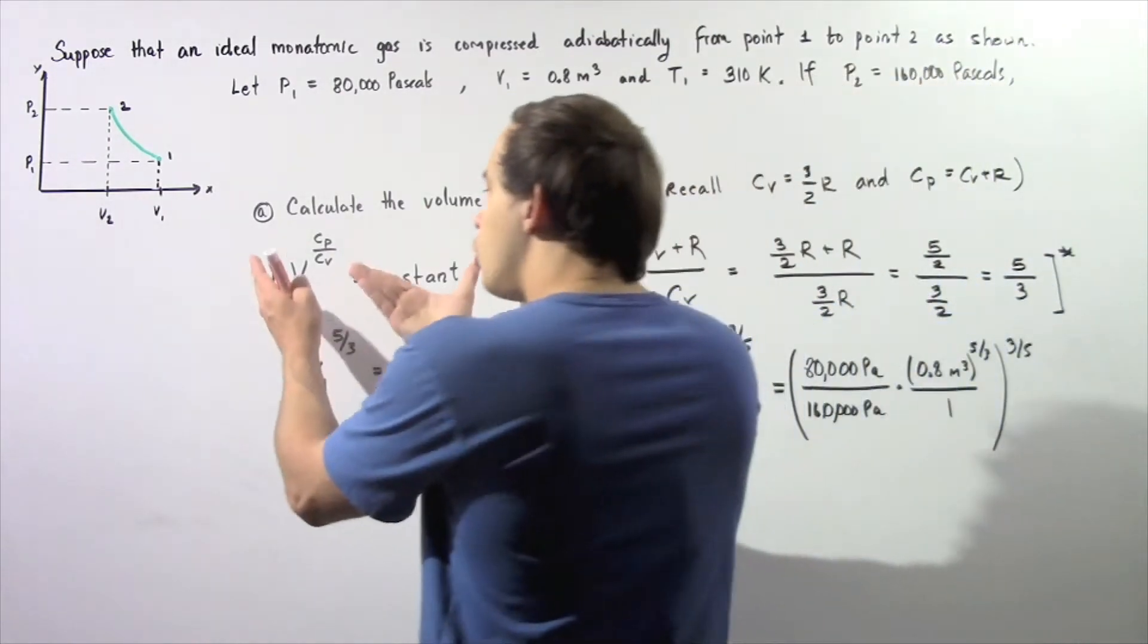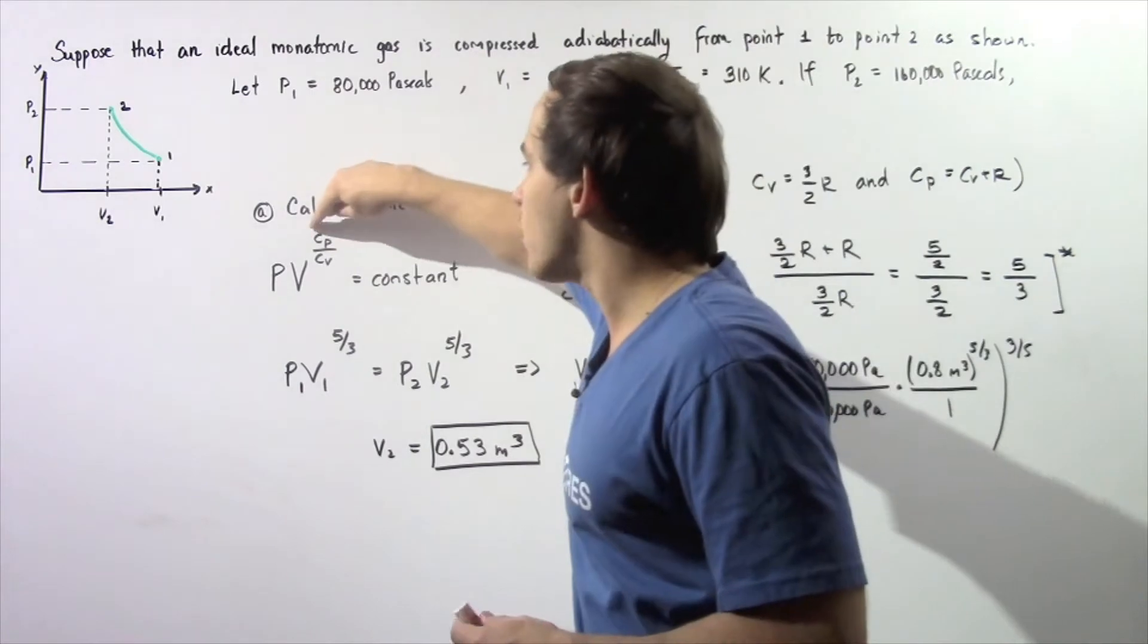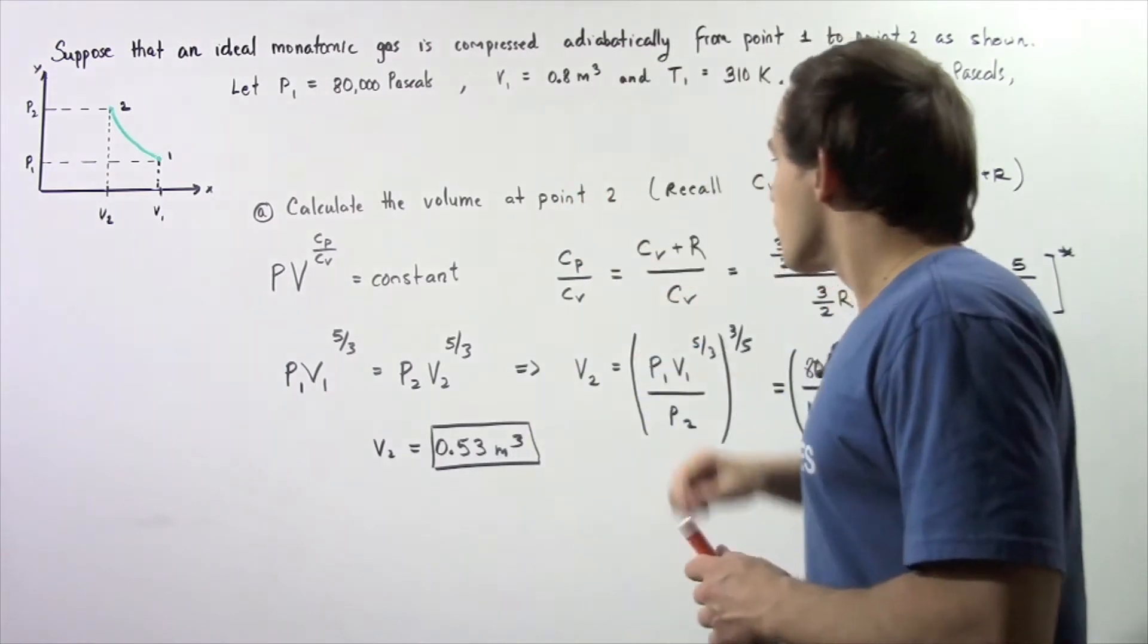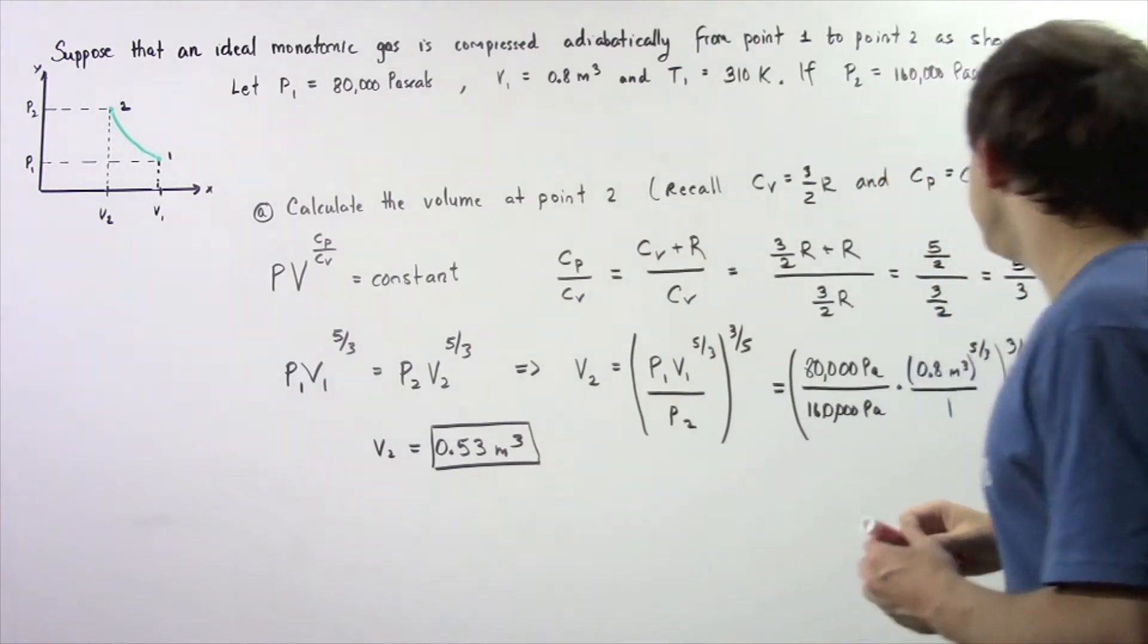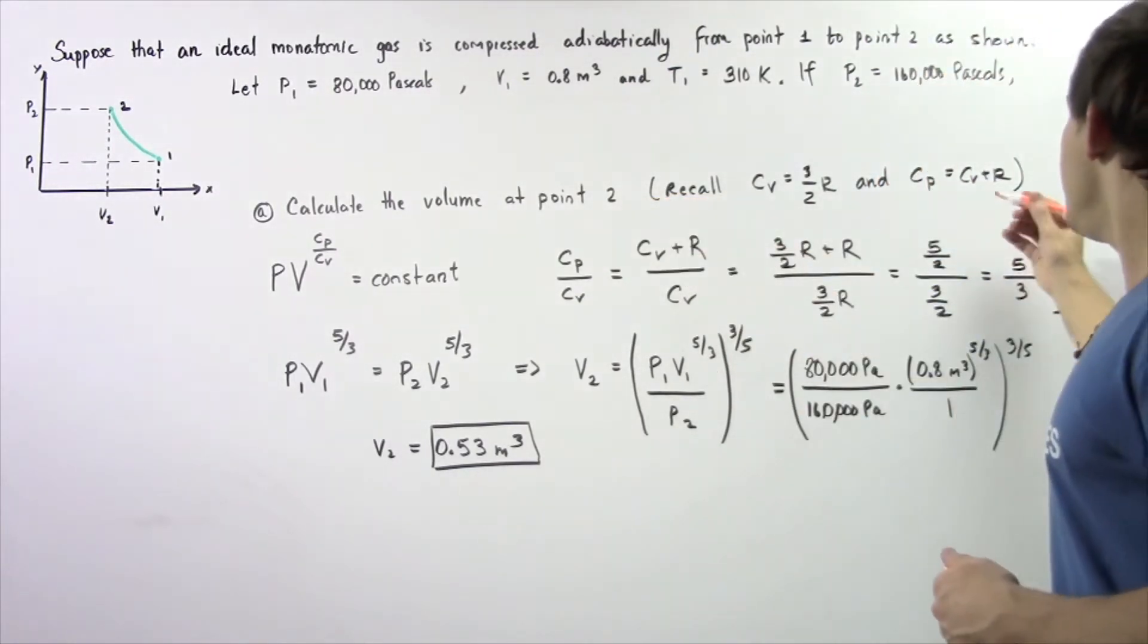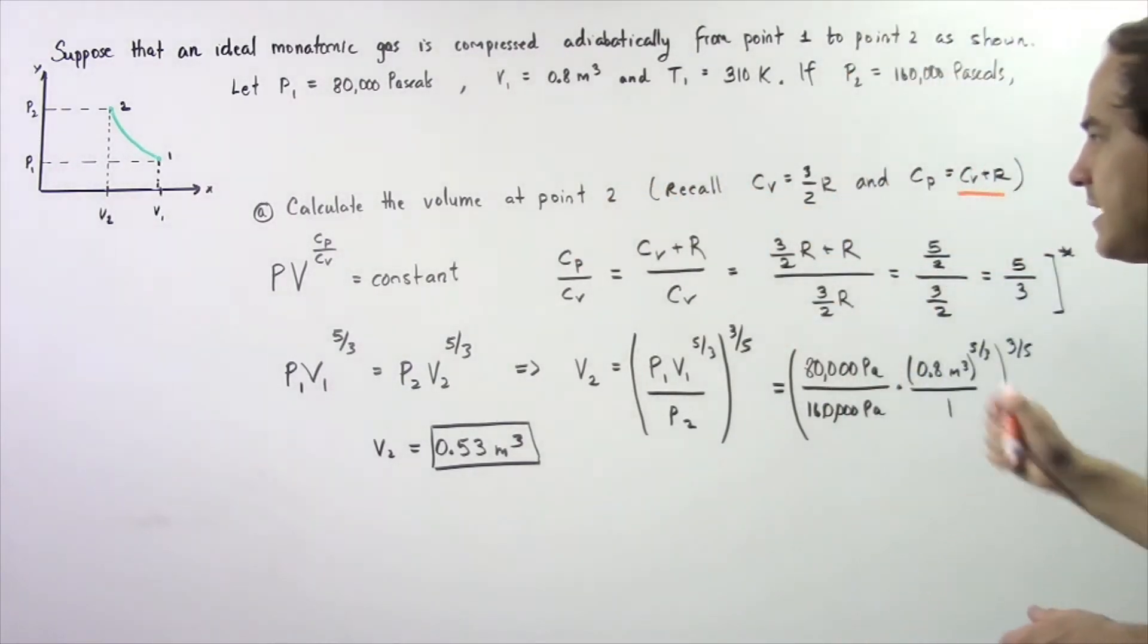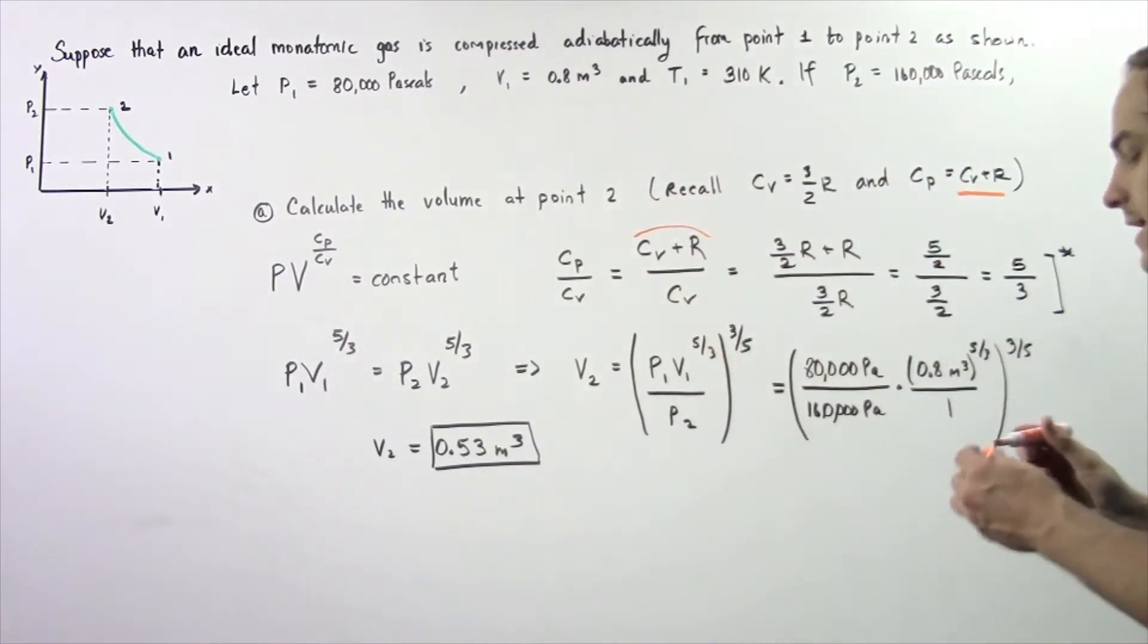Before we actually use this equation, we have to rewrite the ratio CP divided by CV in terms of just R. So we have CP divided by CV. CP is equal to this quantity, so we replace CP, our numerator, with the following result: CP/CV equals (CV + R)/CV.